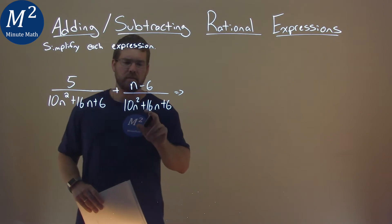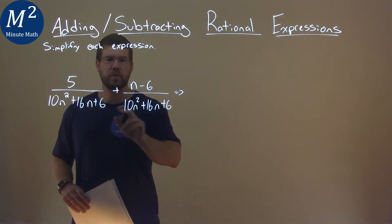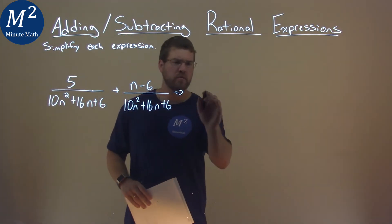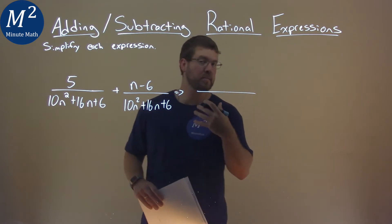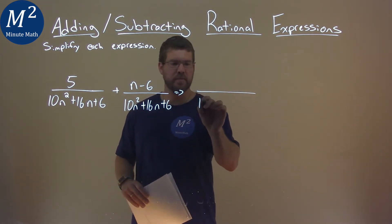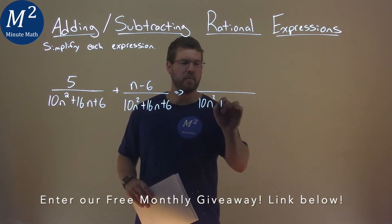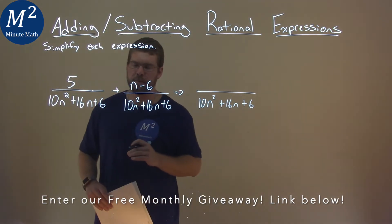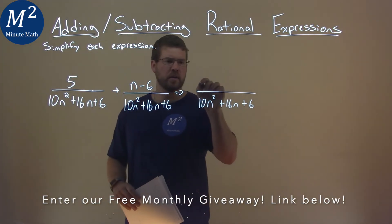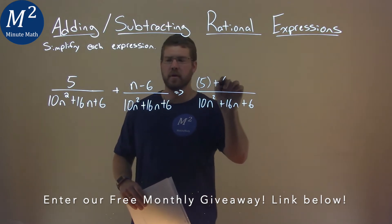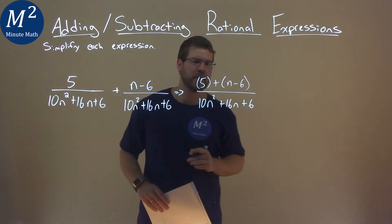Well, first thing I notice, we have the same base here for both of these fractions. So that means we can combine this to be one larger fraction with that base. So we have 10n squared plus 16n plus 6 in the denominator. Now the numerator, we just add it like we normally do: 5 plus n minus 6.